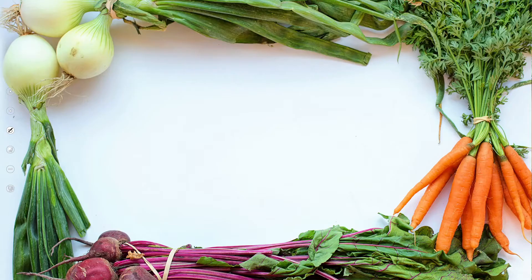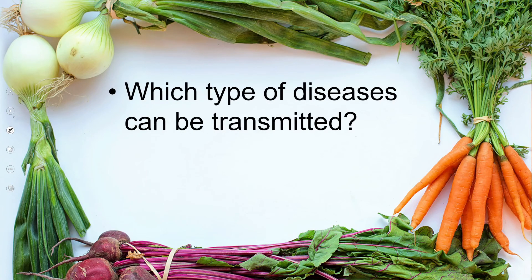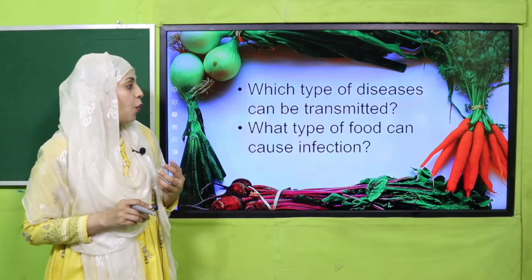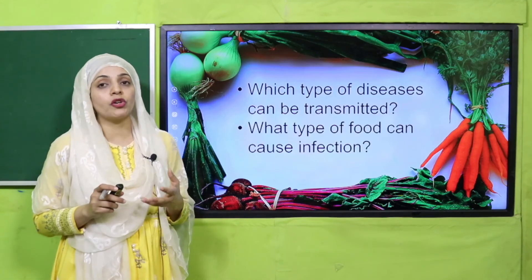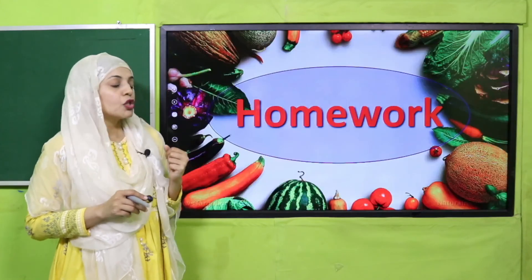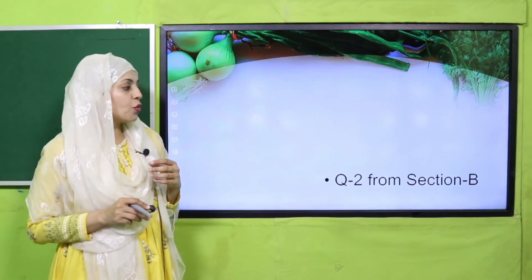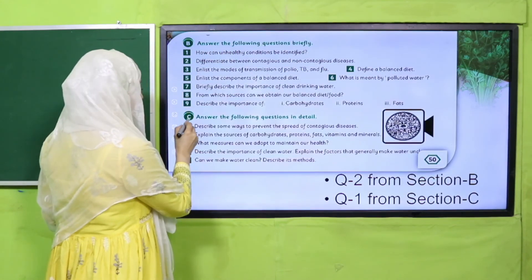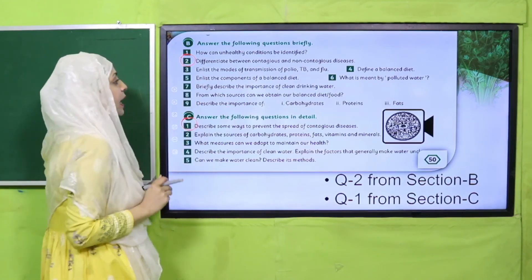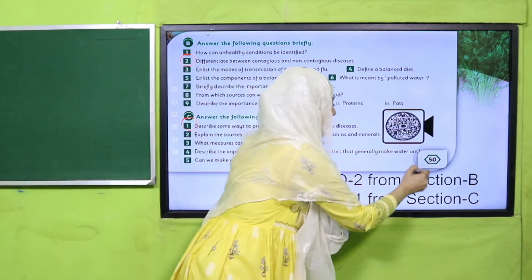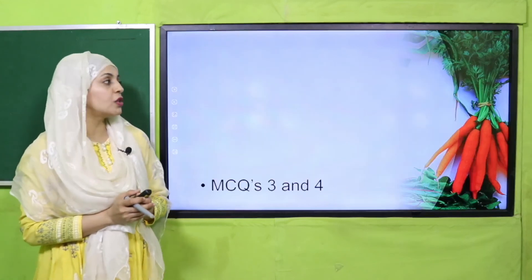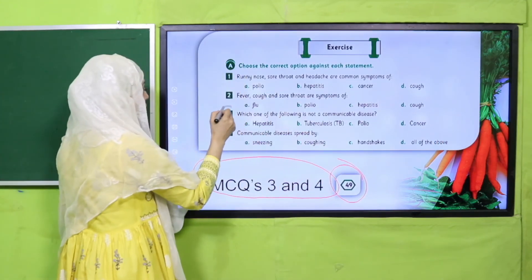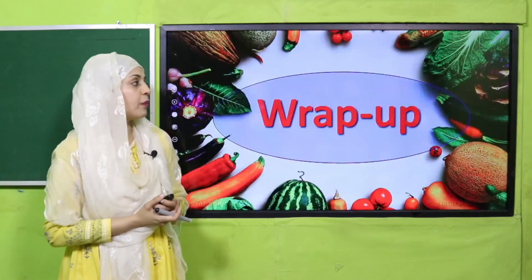Submit the worksheet to your teacher. Evaluation: which type of diseases can be transmitted easily? COVID-19, polio, hepatitis, and TB are contagious diseases. What type of food can cause infections? Contaminated food and water can cause infections. For homework, do question number two from Section B and question number one from Section C on page 50, and MCQs 3 and 4 on page 49 in your notebooks.